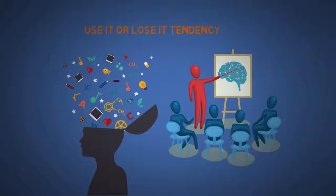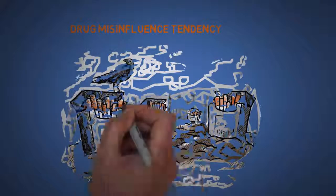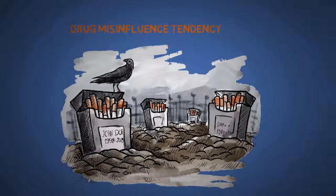The twentieth is the drug misinfluence tendency. This is a very strong tendency that costs lives. It is often supplemented by simple pain avoidance psychological denial.